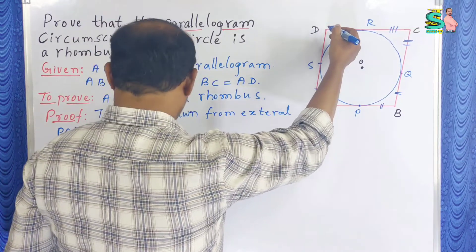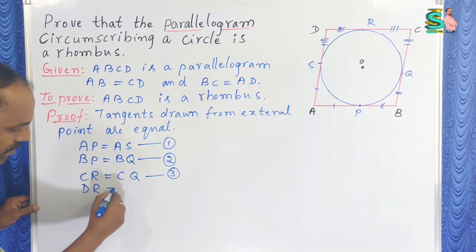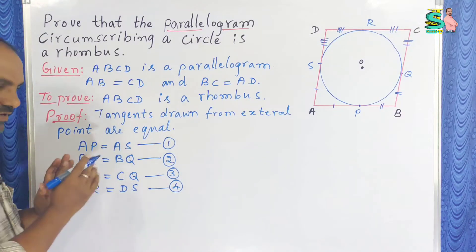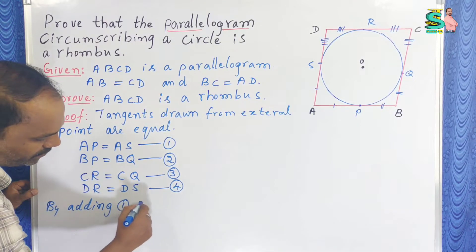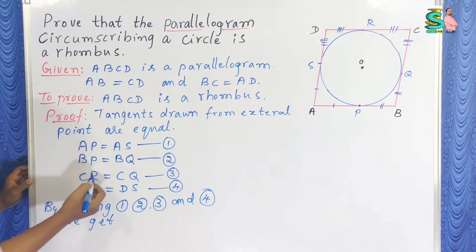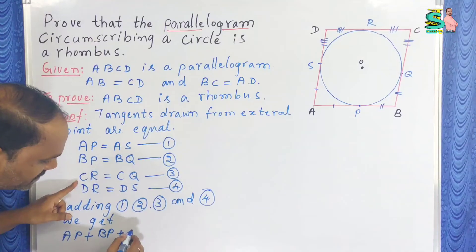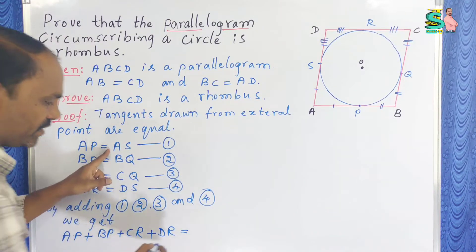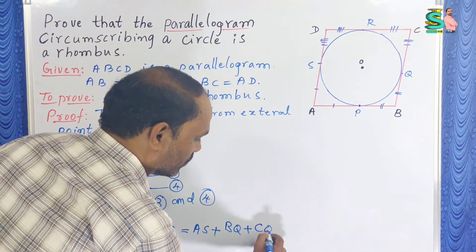From point D: DR equals DS — equation 4. Now we are going to add all four equations. By adding equations 1, 2, 3, and 4, we get on the LHS: AP plus BP plus CR plus DR.